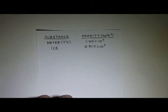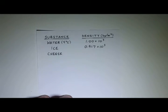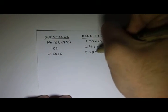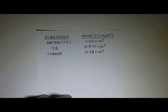Let's see, another common substance. How about cheese? What's the density of cheese? Well, there's a lot of different kinds of cheeses. And so if you look at an average density of cheese, that's about 0.98 times 10 to the 3 kilograms per cubic meter.